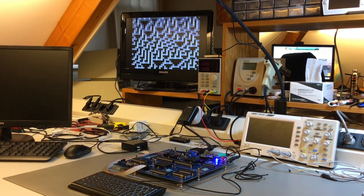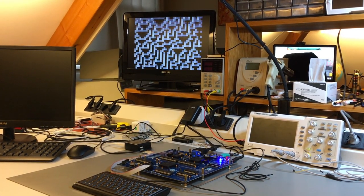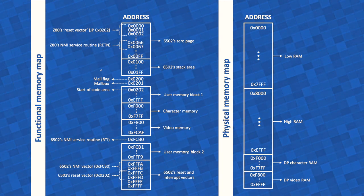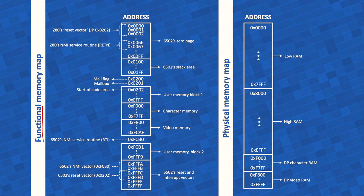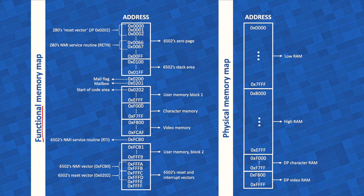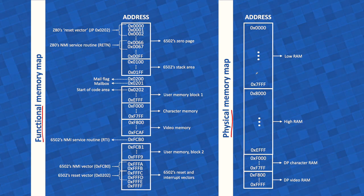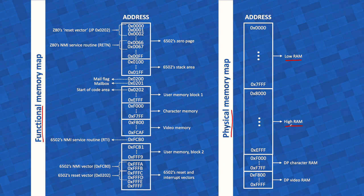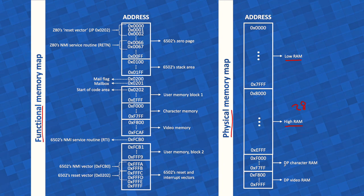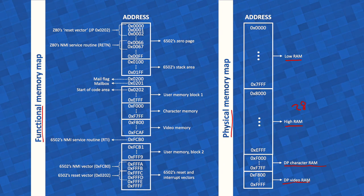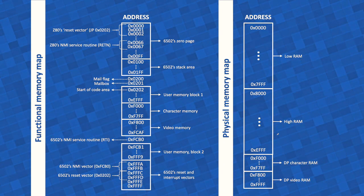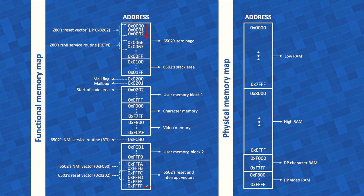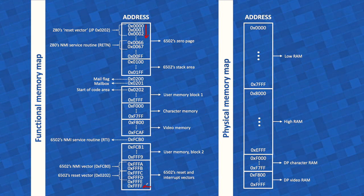Now, let's look at the hopefully final memory map of Cerberus — both functional and physical. I show two versions: the functional memory map lists the function of each address area, and the physical memory map shows which addresses correspond to which of the four memory chips. There are two standard 32KB SRAM chips — low RAM and high RAM, with only 28KB used in high RAM — and two dual-ported RAM chips of 2KB each.